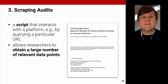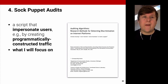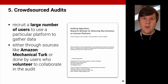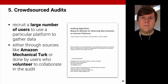Scraping audits use a script that interacts with a platform, for instance by querying a particular URL, allowing researchers to obtain a large number of relevant data points. A more sophisticated version are sock puppet audits, where a script impersonates a user and creates programmatically constructed traffic — and that is what I will be focusing on. The other approach is crowdsourced audits, where you recruit a large number of real users to use a particular platform, similar to sock puppet audits but with real people. This is challenging because you need to find many participants, either through Amazon Mechanical Turk or by inviting volunteers.